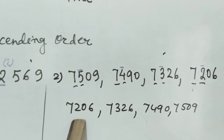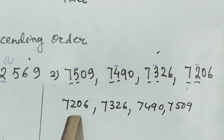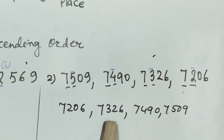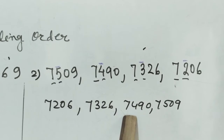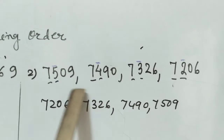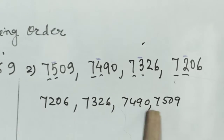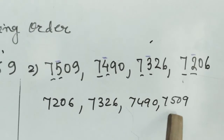The smallest one is 7206, then comes 7326, then comes 7490, and afterwards 7509.